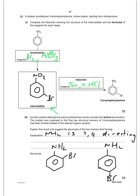Another student attempts the same synthesis but carries out the reduction before bromination. He or she was surprised to find two structural isomers had been formed instead of the desired product. Why? Well, NH2 is going to be like phenol. Because, again, the nitrogen atom, when it's attached to the benzene ring like so, he's got a lone pair of electrons on him which can donate into the benzene ring. Which makes him 2, 4, 6 directing.